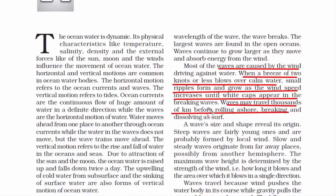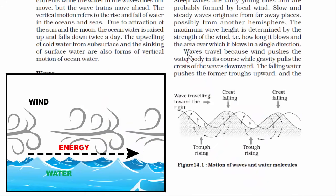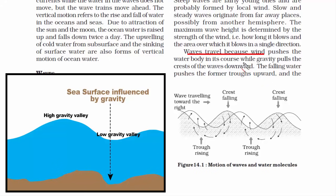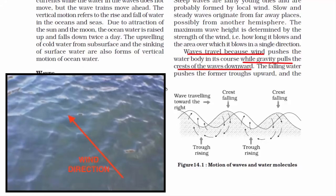Why does the ocean have waves? First, wind pushes the water body — when wind touches the water surface, it creates a wave that can travel thousands of kilometers. Second, gravity also plays an important role: gravity pulls water molecules downward. When there is friction between wind and the surface water, it creates a natural disturbance, and that's how wave energy is created.